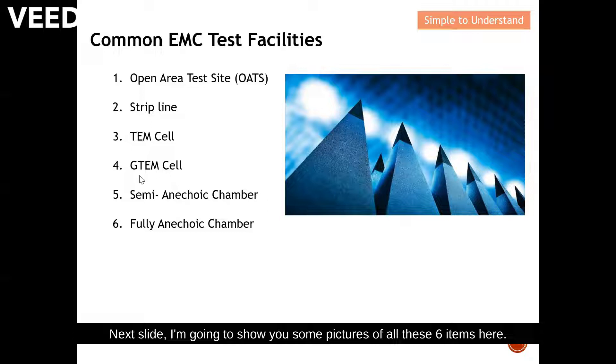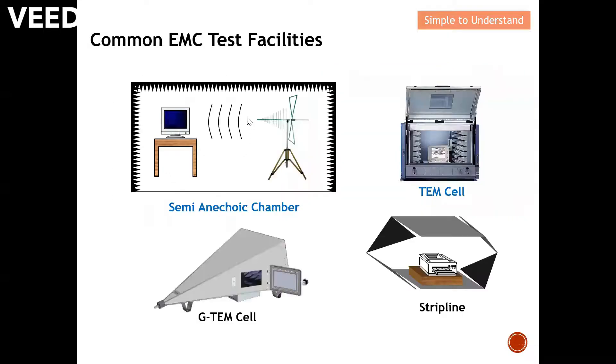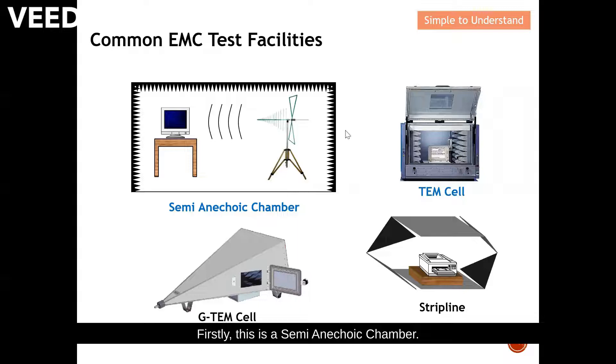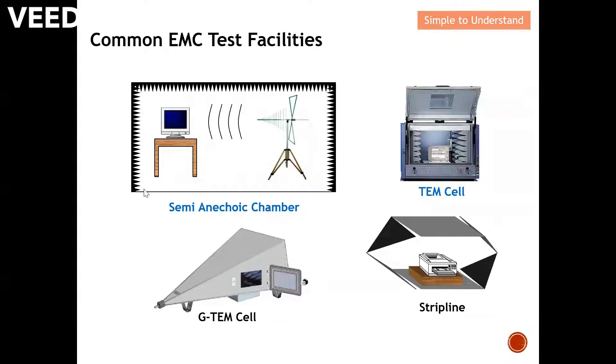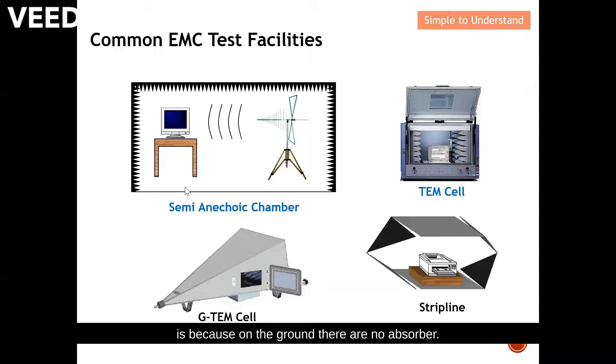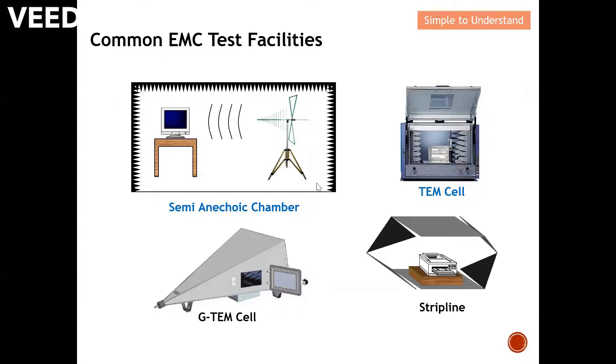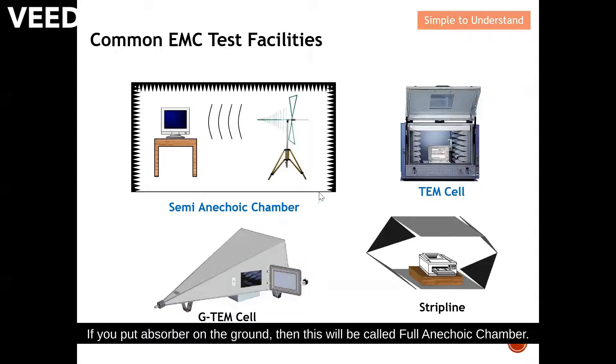Firstly, this is a semi anechoic chamber. You can see that why this is called semi anechoic is because on the ground there are no absorbers. If you put absorbers on the ground, then this will be called a full anechoic chamber.